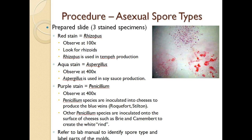The aqua stain is Aspergillus — observe it at 400X magnification, and note that Aspergillus is used in the production of soy sauce. The purple stain is Penicillium, also observed at 400X. Note that you don't need 1000X for molds, as molds are much larger than bacteria. Penicillium species are commonly inoculated into cheeses to produce the blue veins, so if you had Roquefort, Stilton, or Shropshire, you may isolate a Penicillium species in your slide culture. Other Penicillium species are inoculated onto the surface of cheeses such as brie and camembert to create the white rind. Use your lab manual to identify the spore type and label the parts of the mold.